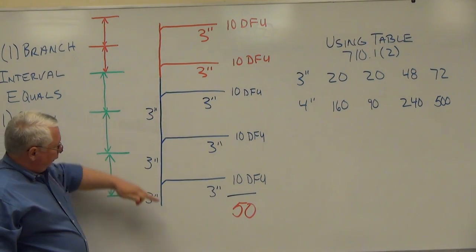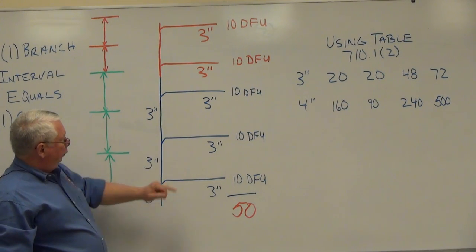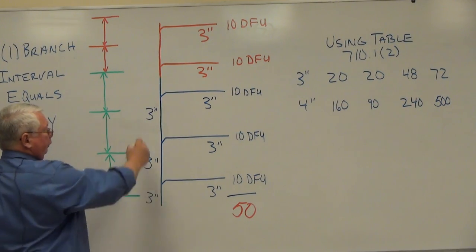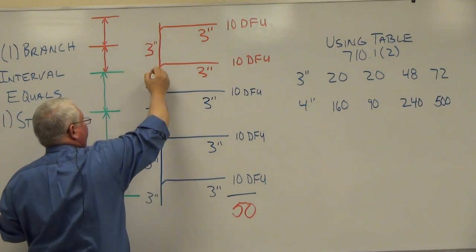When I look at the stack in general, I can carry a total of 72 drainage fixture units for the whole stack, so that's going to say that each one of these sections is three inch also.